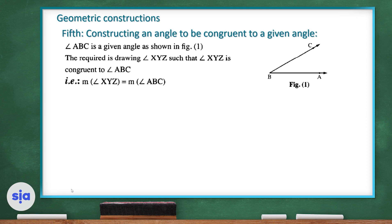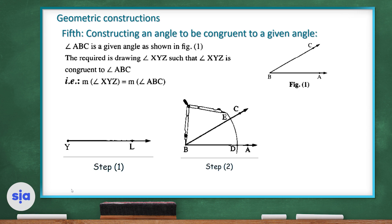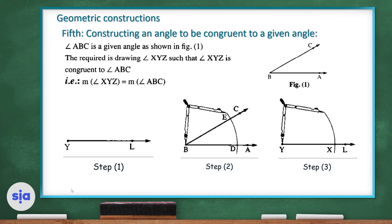First, draw ray YL. Second, from the given angle, put the pin of the compass at point B and make an arc. Third, go to ray YL, put the pin on point Y, and make an arc — make sure the compass opening in step two is the same as in step three, so don't change the opening.